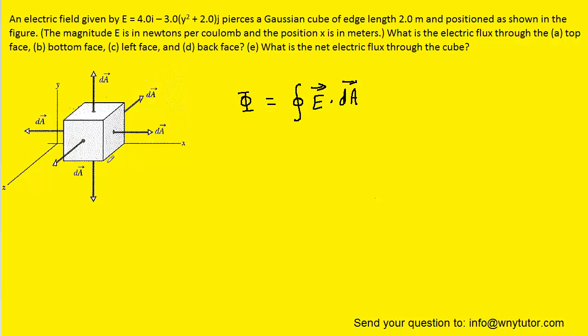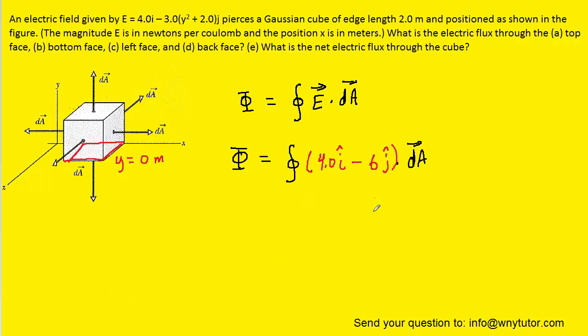We now go on to part B, which wants us to calculate the electric flux through the bottom face. The y coordinate of that bottom face is actually zero meters. We'll plug zero in for y in our electric field equation. When we simplify, we get 4.0 i-hat minus 6.0 j-hat. That's the expression for the electric field we'll plug into our integral.